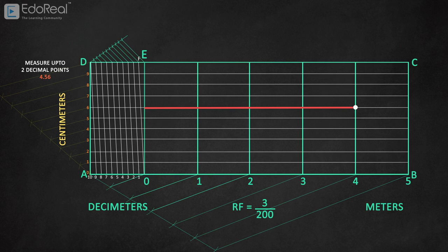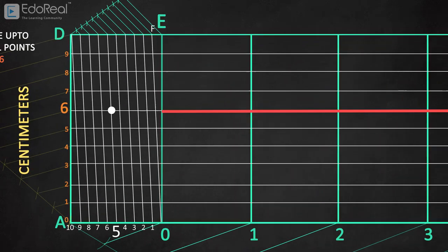Still 0.56 meters remaining, that is 5 decimeters and 6 centimeters. Now choose the point where 5 decimeters and 6 centimeters meet as shown, and draw the line from that point to the zero. Finally that measures 4.56 meters accurately with the diagonal scale.